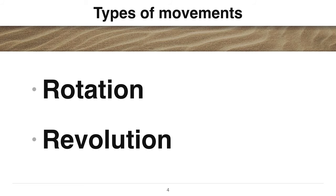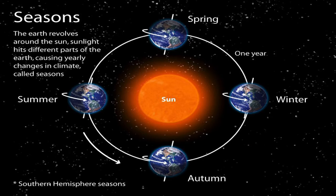There are two types of movements of the Earth: first is rotation and the second is revolution. The movement of the Earth on its axis is called rotation. It takes 24 hours to complete one rotation. The rotation of the Earth on its tilted axis causes day and night.